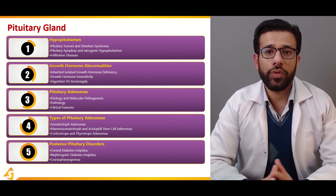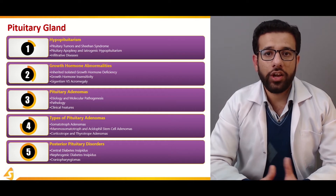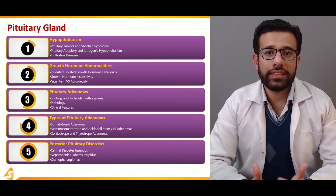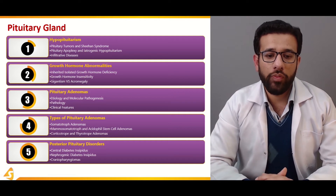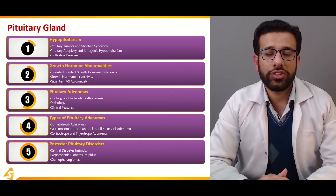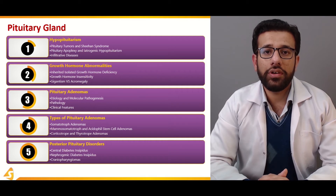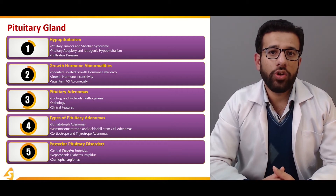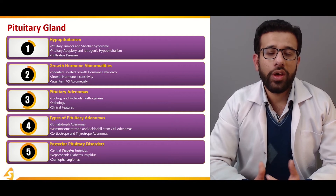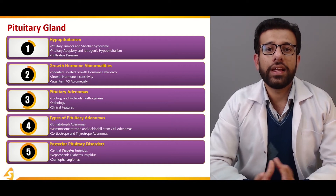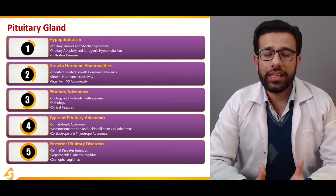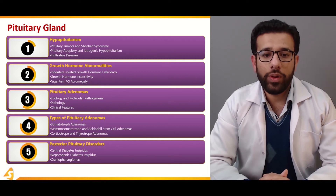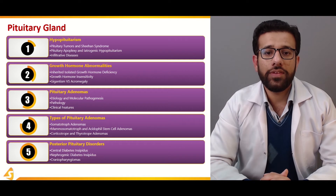There is also a comparison of gigantism and acromegaly, which are the clinical manifestations of excess growth hormone. In the third section, the most common pituitary adenoma — prolactinoma — will be discussed in detail, including its clinical picture, diagnosis, and management.